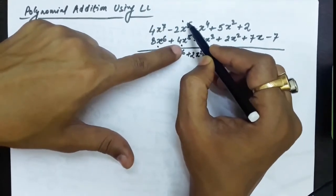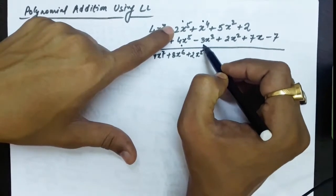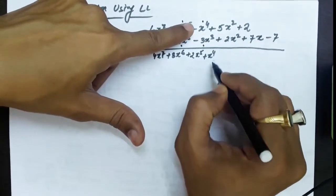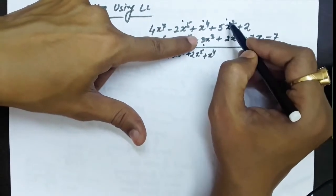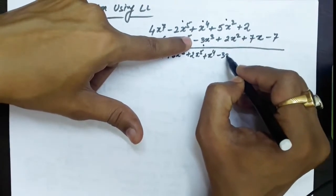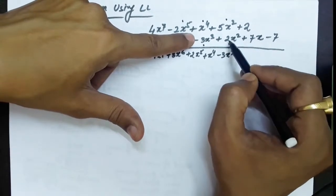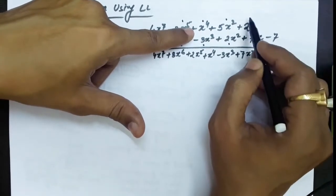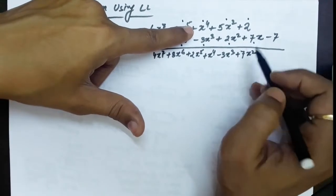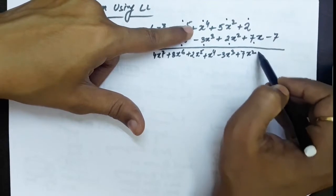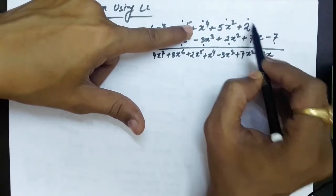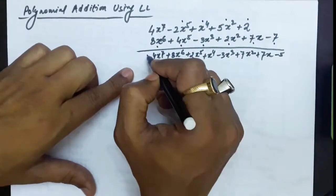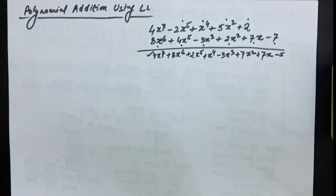When the exponents are the same, their coefficients will be added: 4 minus 2 equals plus 2, so the result is 2x to the power 5. Then we progress to the next terms. For one comparison the exponent on one side is larger, so that larger term is added to the final polynomial. We continue: minus 3x cubed is added, then two terms with equal exponents yield 7x squared. Finally, comparing terms with exponent 0, we get 2 minus 7 equals minus 5. This is the answer polynomial.